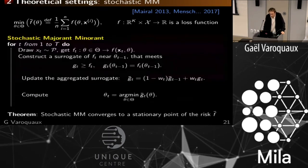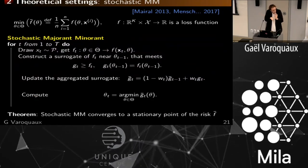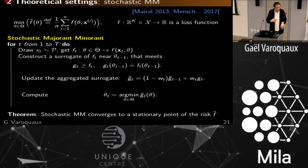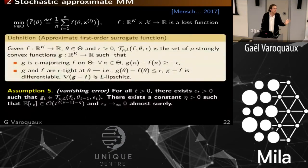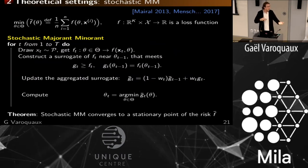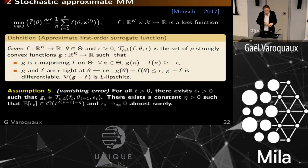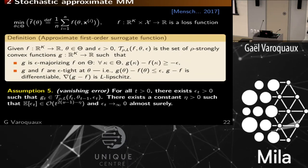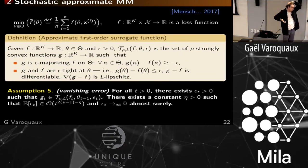The stochastic MM algorithm is natural: you draw data, compute a surrogate function that majorizes your cost function — close enough — optimize it, and draw more data. Now the approximate version is the interesting part: if you need to fully optimize everything each time it's terribly costly. What we have is online alternated optimization where you don't really optimize well. We then need the notion of an approximate first-order surrogate, where the error between what you're trying to surrogate and your approximate surrogate is controlled.